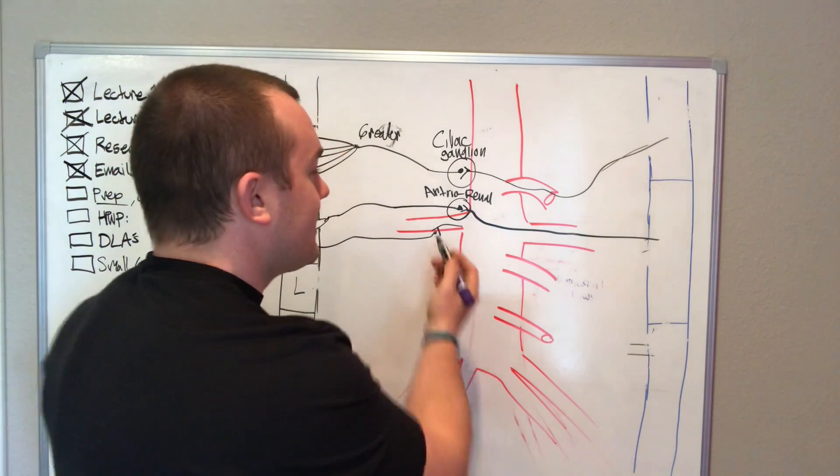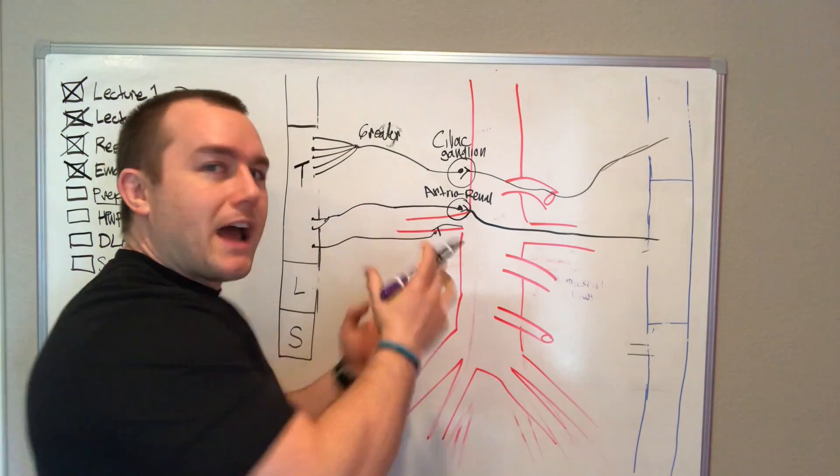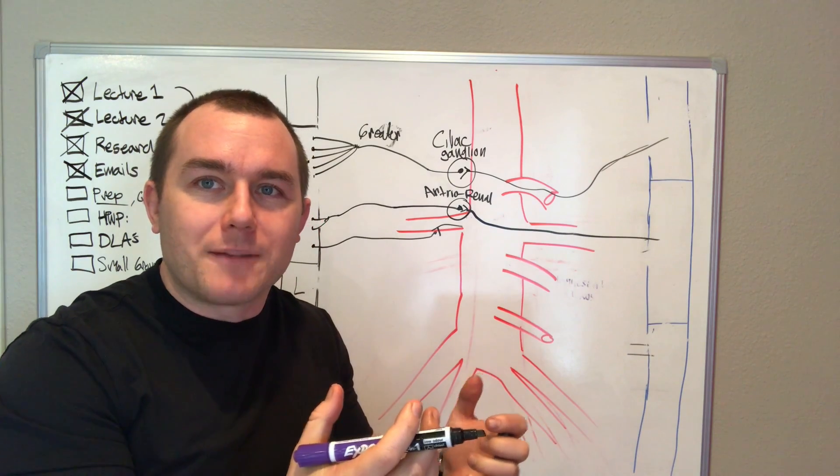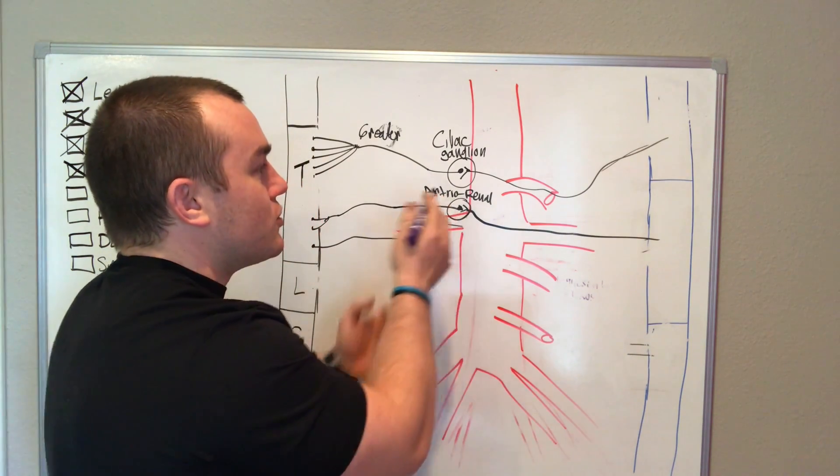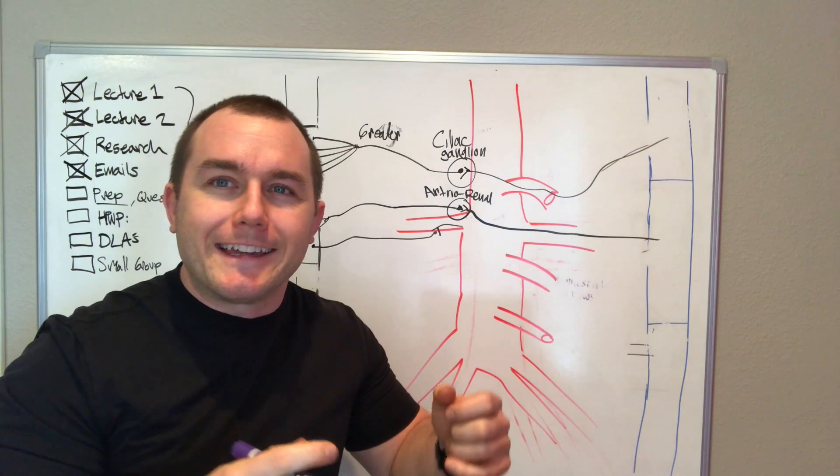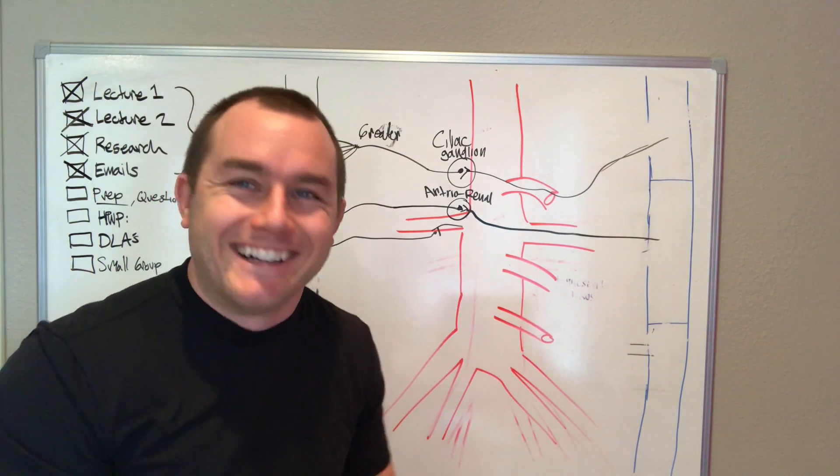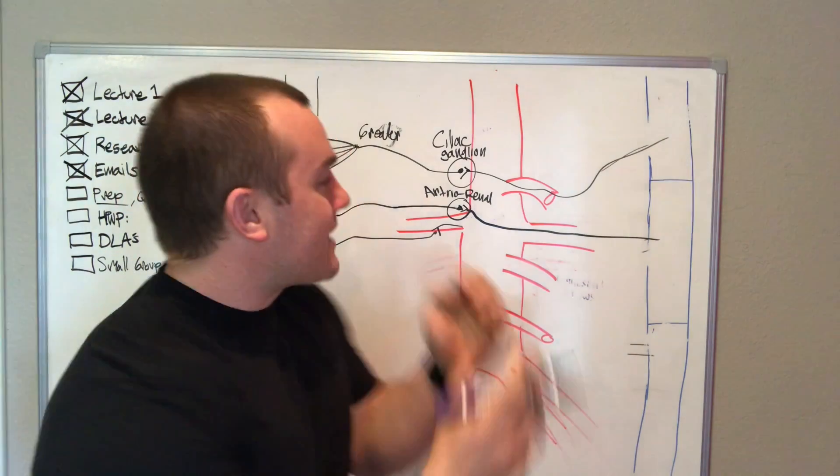But then I'm like, oh, wait a second. This one innervates kind of at the renal part, okay, like more just the kidneys. This is like the junction between the kidney and the aorta. That's why it's called the aortico-renal ganglion. So that's just one example.